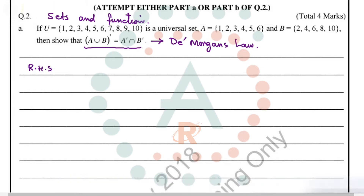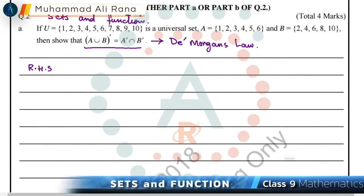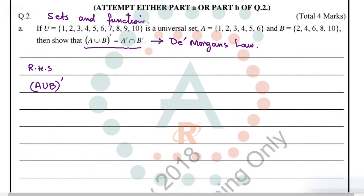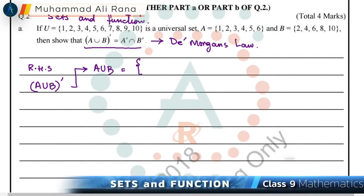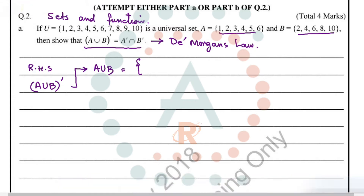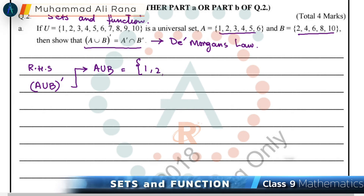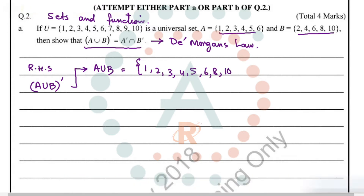Let's start with the left-hand side of this expression. On the left-hand side we need to find (A∪B)'. First, let's find A∪B. Given sets A and B, if we take the union of these two sets, A∪B becomes {1, 2, 3, 4, 5, 6, 8, 10}.